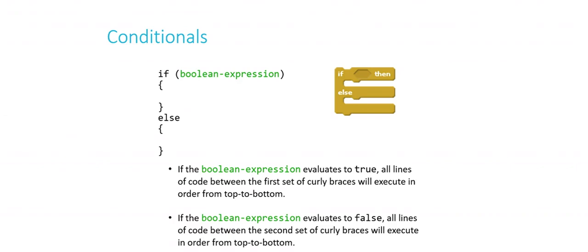If Boolean expression, do the stuff between the first set of curly braces. Else, do the stuff between the second set of curly braces. So if the Boolean expression is true, we'll do whatever's between the first set. If the Boolean expression is false, that would trigger the else, and we would do whatever is in the second set of curly braces. Again, top to bottom, all the lines in between the braces.